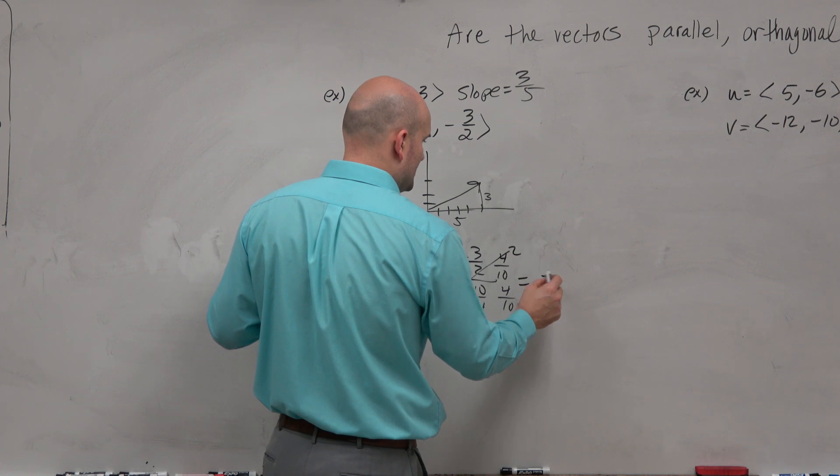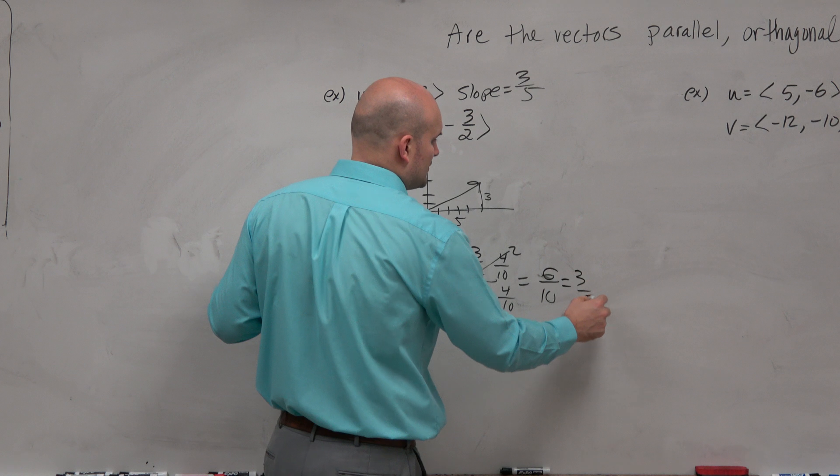And this gives me a positive, that turns to positive, a 6 over 10, which reduces to a 3 fifths.